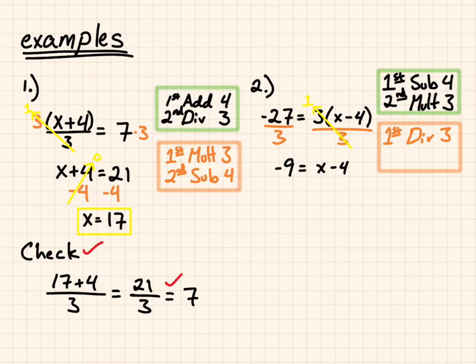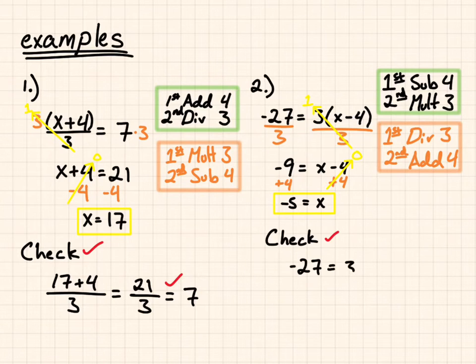Now, the opposite of subtracting 4 is to add 4. So I add 4 to both sides. Negative 4 plus 4 goes to 0, and I'm left with x equals negative 5. To check my work, negative 27 equals 3 times the quantity negative 5 minus 4. Well, negative 5 minus 4 is negative 9, and negative 9 times 3 does give me negative 27.